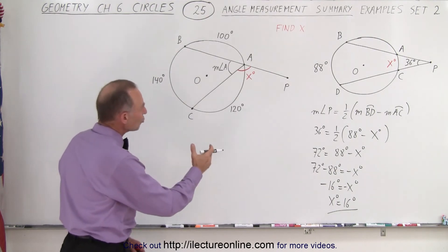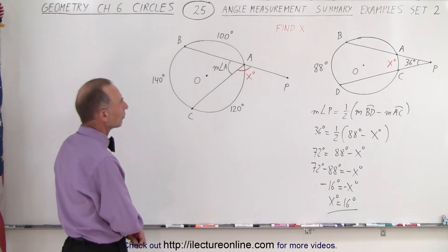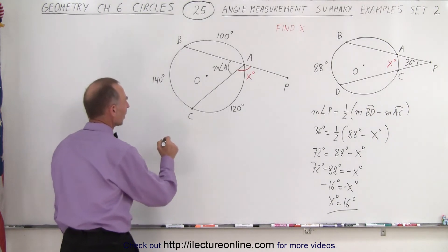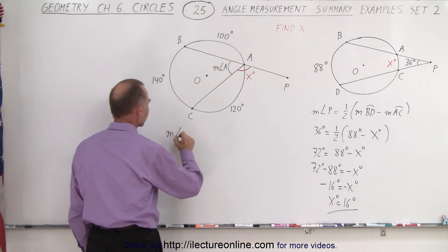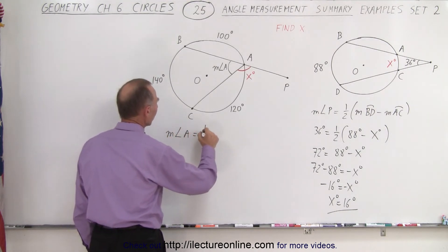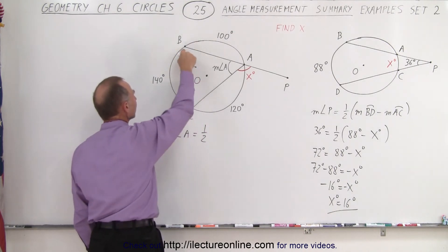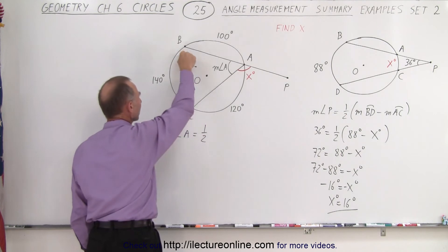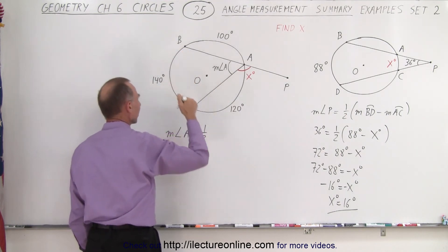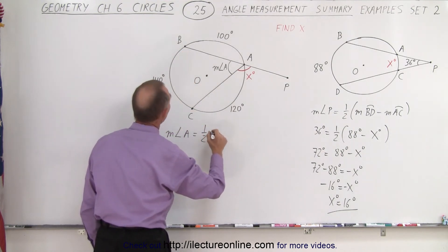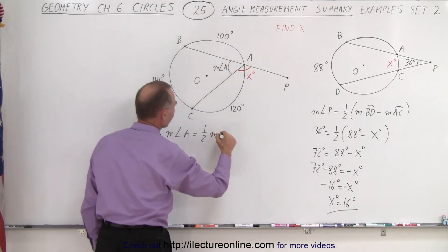And since it's on the edge of the circle, what we can then say is that the measure for the angle A is equal to one-half the measure of the arc length made by the endpoints of these two lines right here, where it crosses the circle on the other side. So that would be the measure of the arc length from B to C.